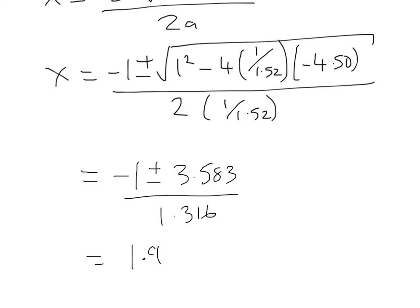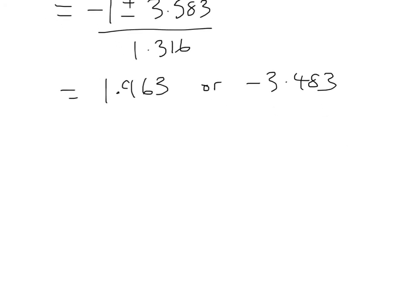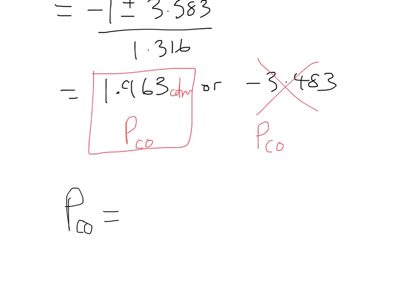So one of these we can throw out, and the one we can throw out is this one, because X is the partial pressure of carbon monoxide, so I guess that means we should probably write units. And we know that a negative pressure is impossible, so it has to be a positive pressure. And so then we can just go ahead and write that the partial pressure of CO is 1.963 atmospheres.